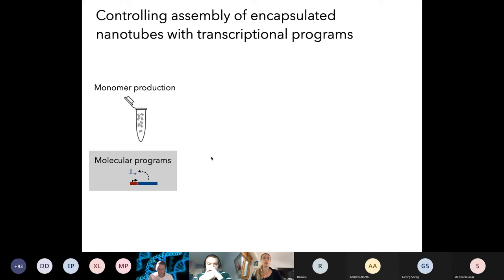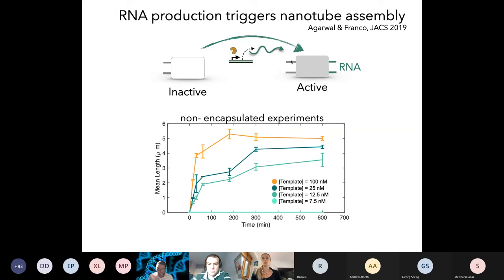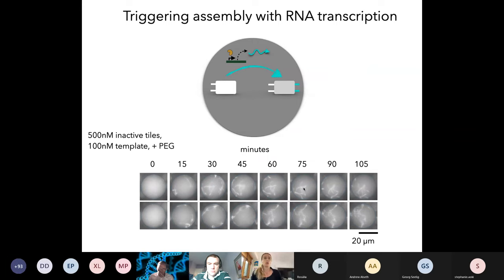With that in mind, we went on and tried to do transcription and degradation inside the droplets together with the self-assembly. First, of course, you need to try it in a non-encapsulated context, and there's many parameters you can vary, because now you have a synthetic gene that is producing RNA in the presence of polymerase. For example, one thing you can do is change this genetic template that is producing RNA. Of course, the more template you have, the more nanotubes you will observe. These are data from non-encapsulated experiments showing you mean length versus time. Now you can do the same thing inside droplets.